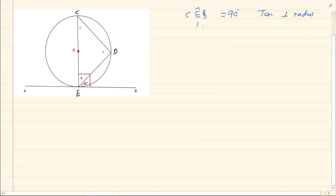That would mean that K is equal to 45 degrees. Because if this one is 45 degrees, then that is also going to be 45 degrees.